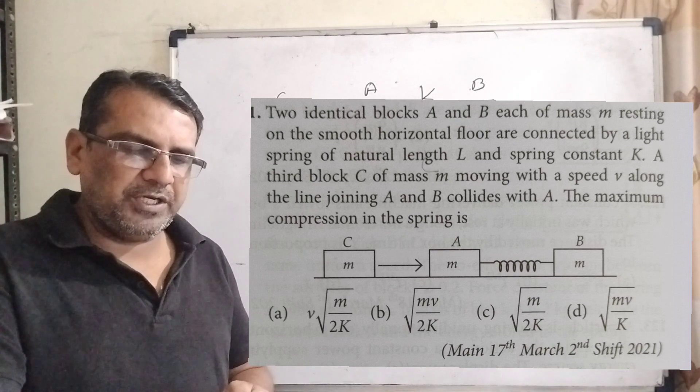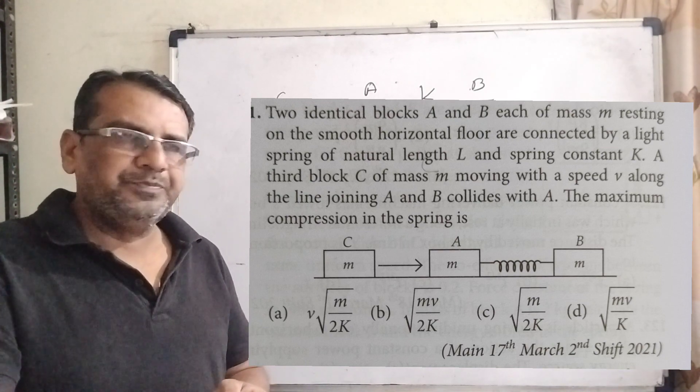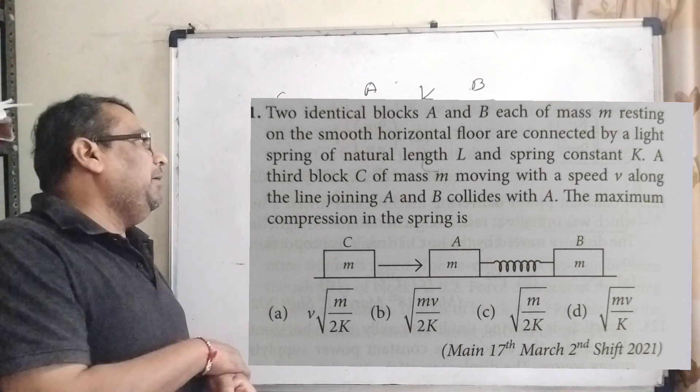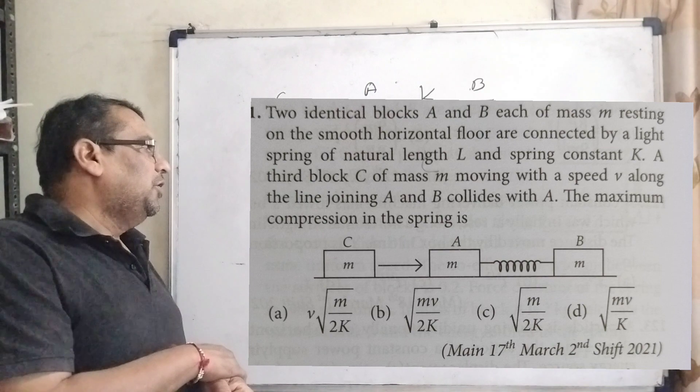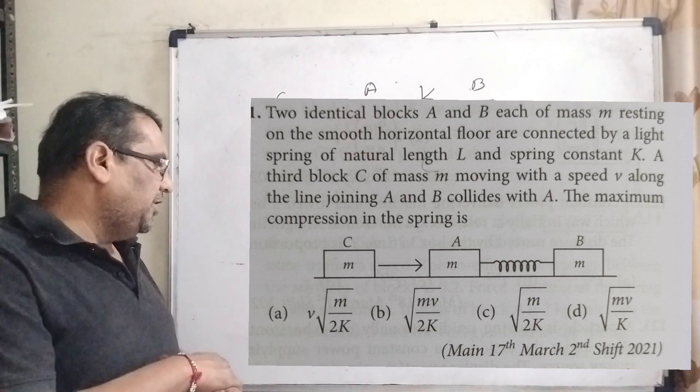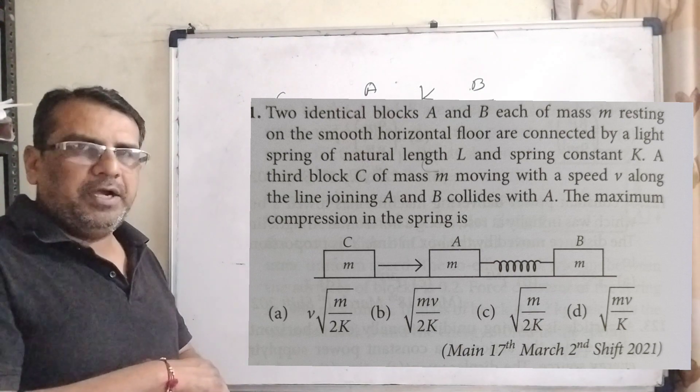The maximum compression in the spring is - here we have given four options: first option v√(m/2K), option B √(mv/2K), option C √(m/2K), and last option D √(mv/K).